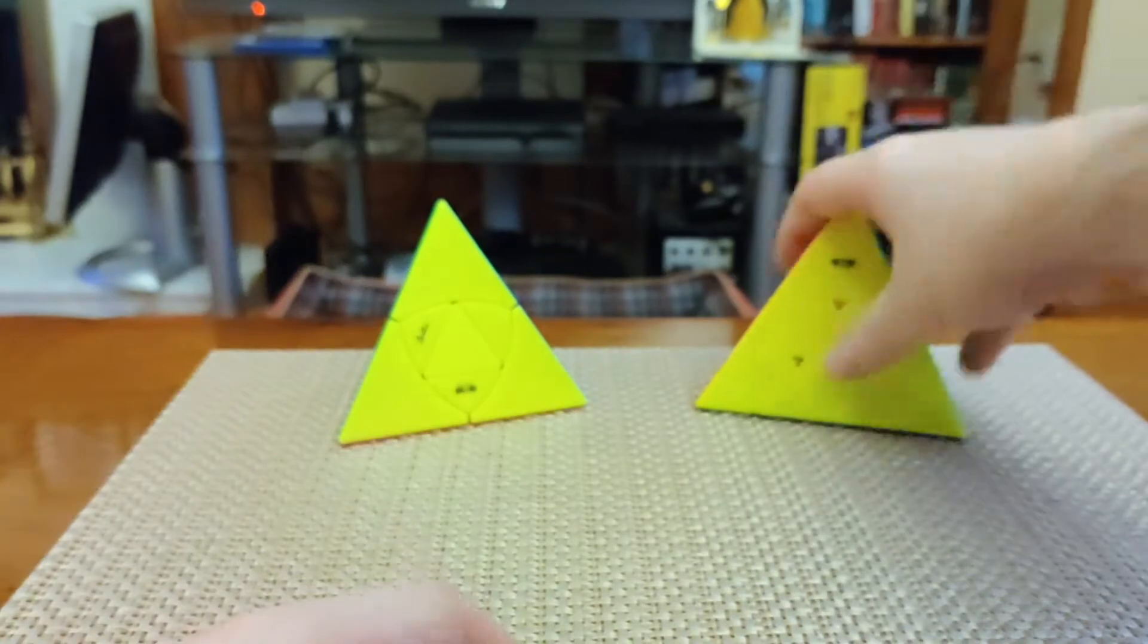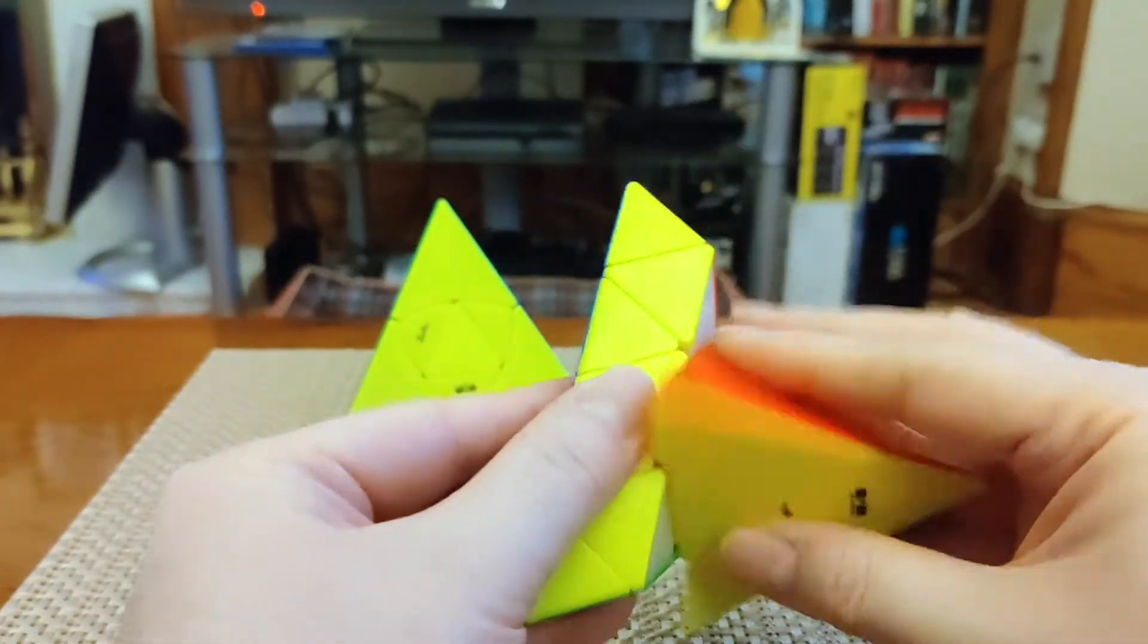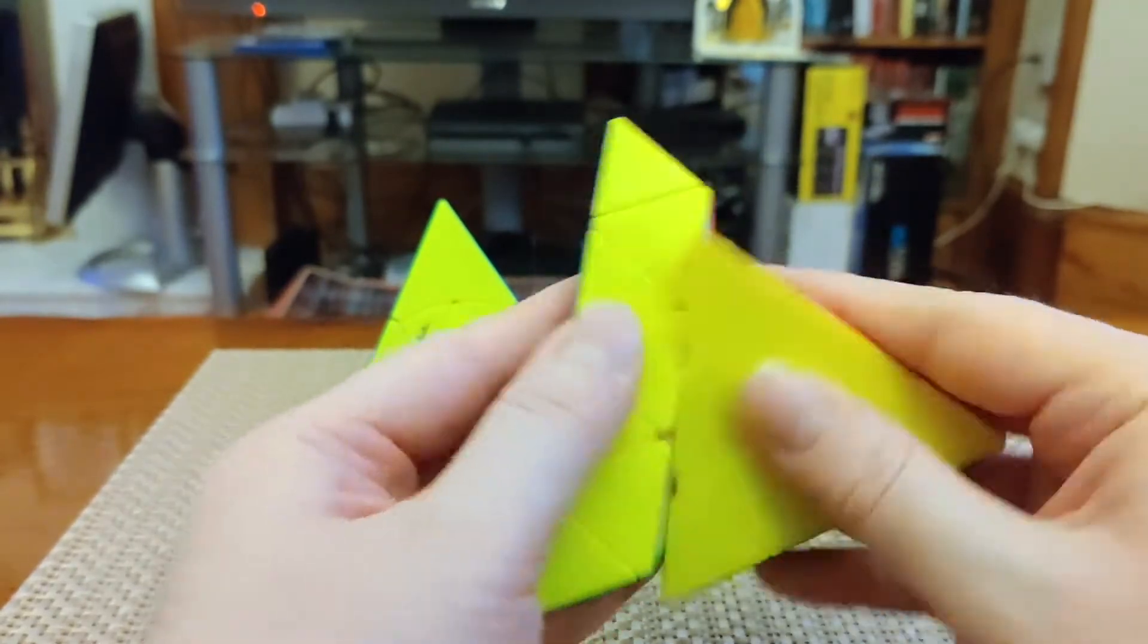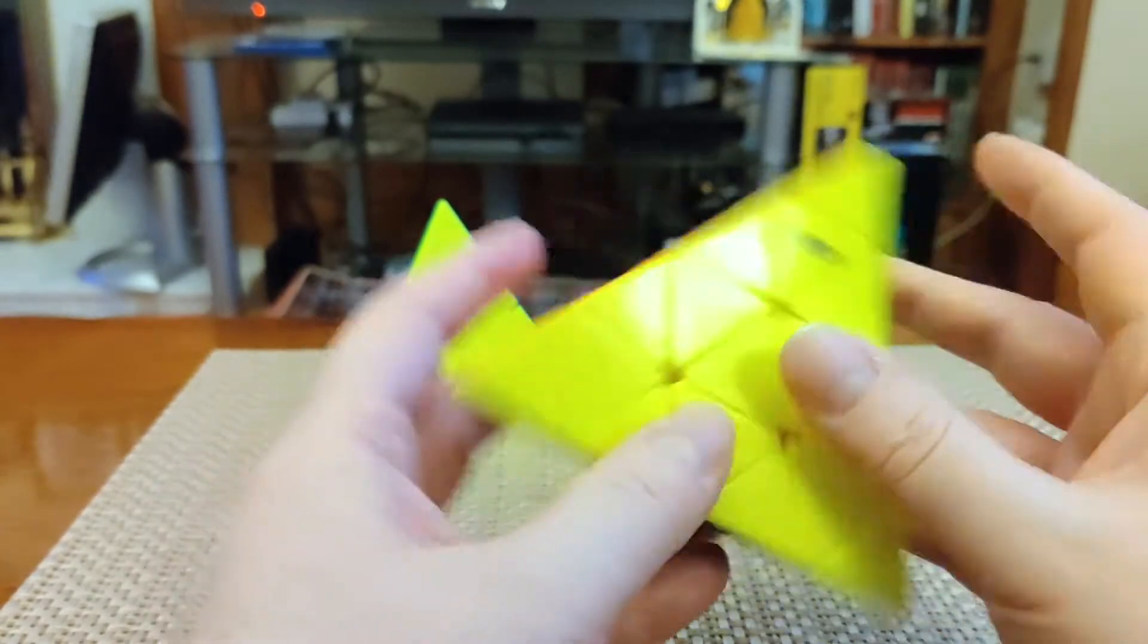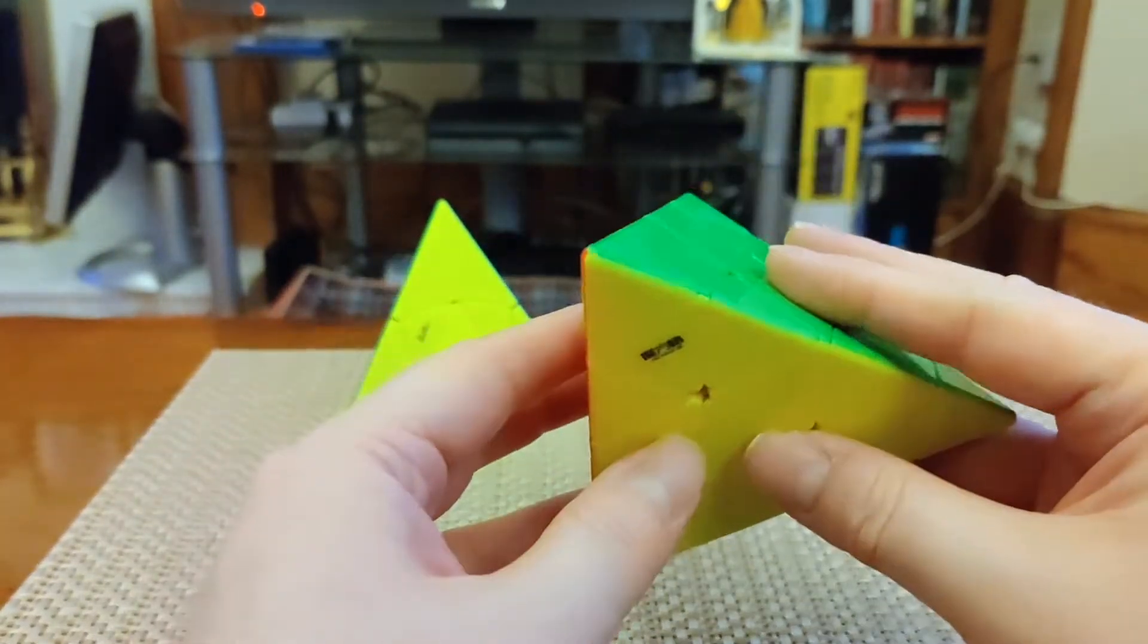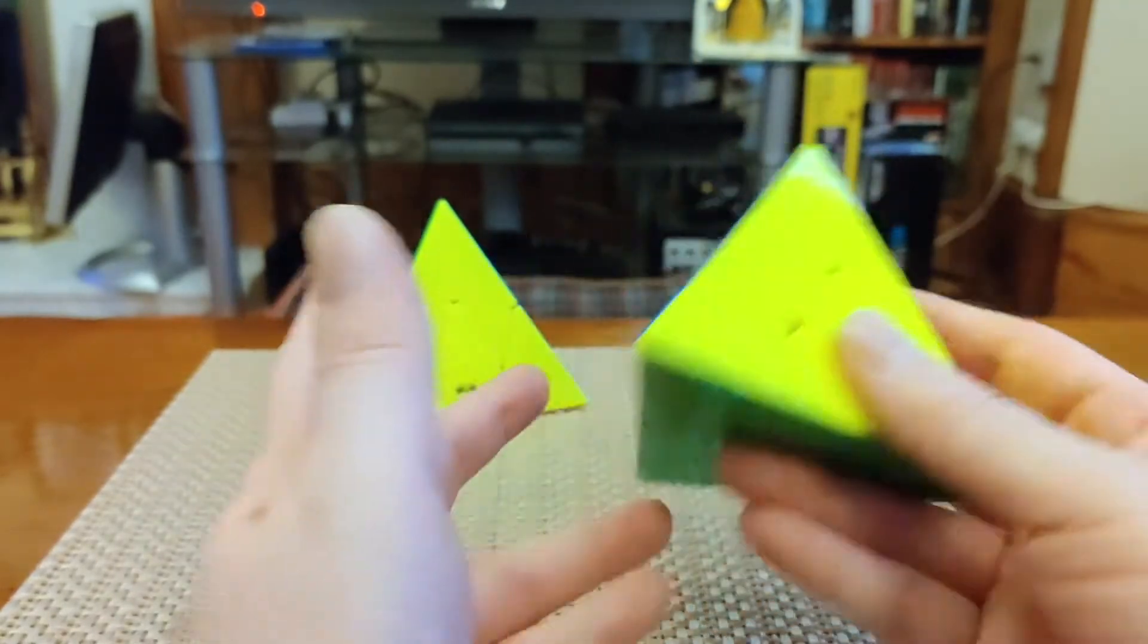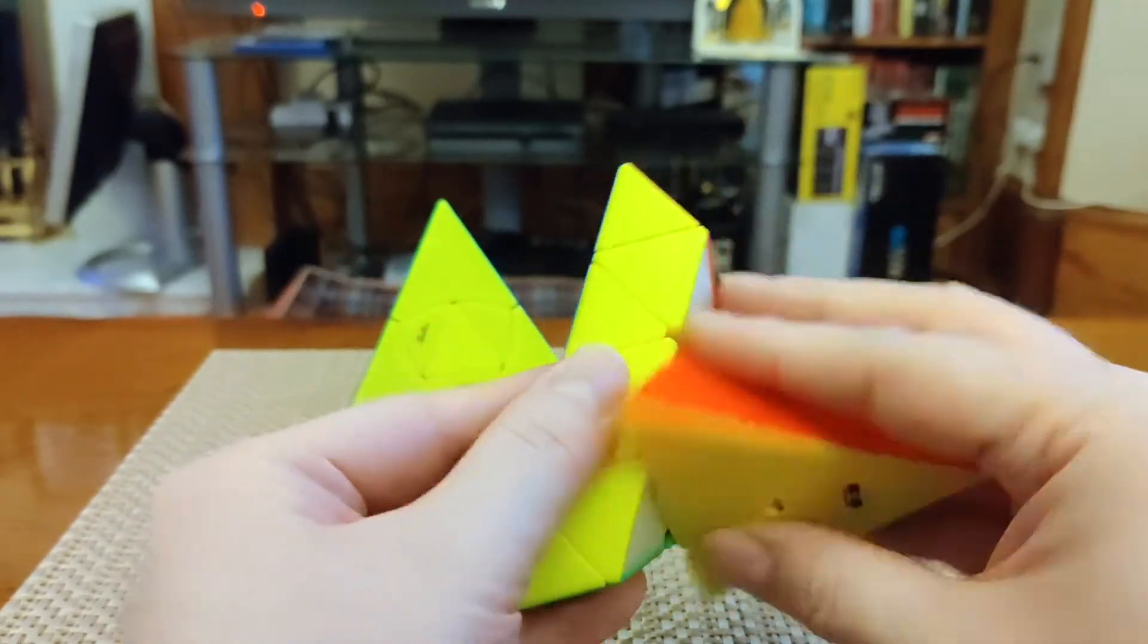The Master Pyraminx is a bit of an older design. It's clearly not belonging to the most up-to-the-minute era of extremely smooth, cheap speed puzzles. You can still speed solve with this, but you have to be a little bit careful with it. This one will cost you about $8 or $9 on Z-Cube, maybe $12 at the Cubicle, or 11-12 pounds in the UK.